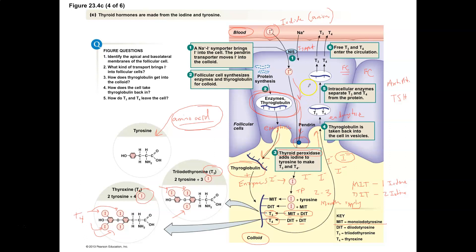Endocytosing from the colloid brings the newly created T3s and T4s into the follicular cells so that enzymes can separate the T3 and T4 from the thyroglobulin. We're going to separate the thyroid hormone from the endocytosed material so that eventually we can dump the T3 and T4 into the bloodstream. The T3 and T4 gets to the edge of the follicular cells, and we have transporters — monocarboxylate transporters — that move T3 and T4 from the follicular cell out into the bloodstream.